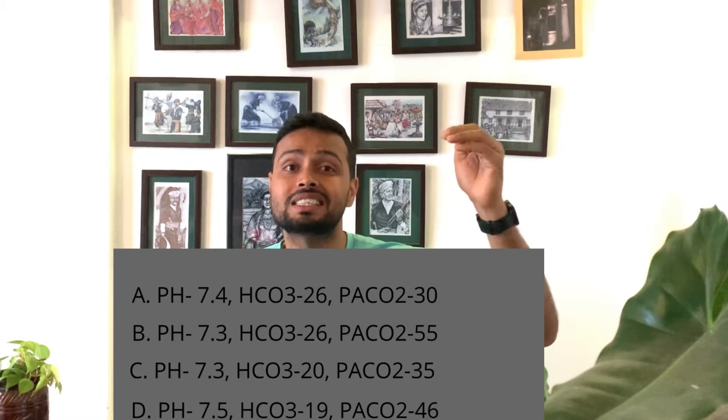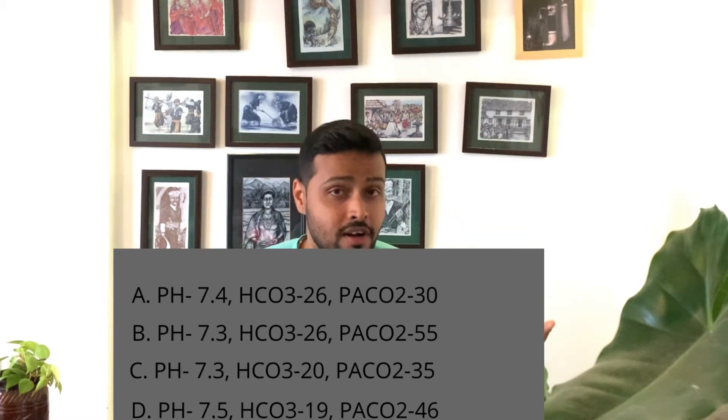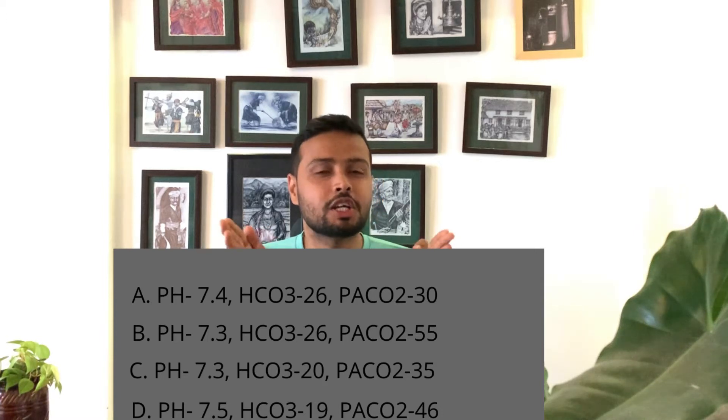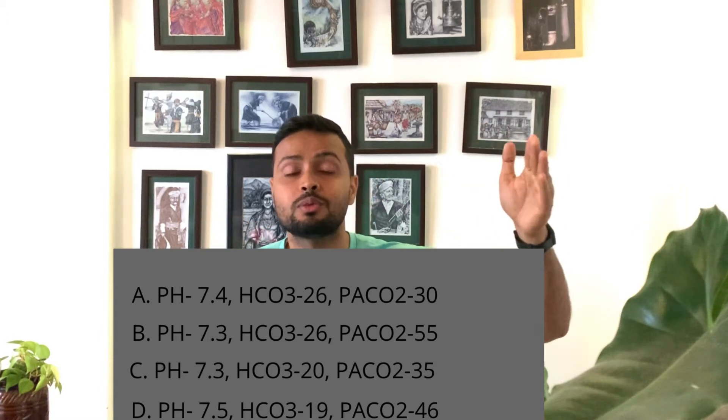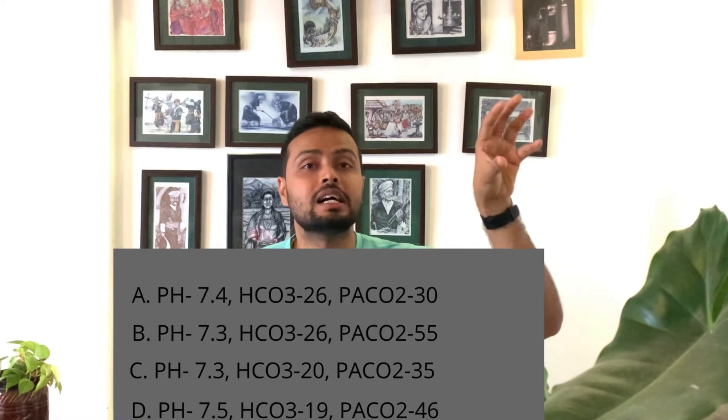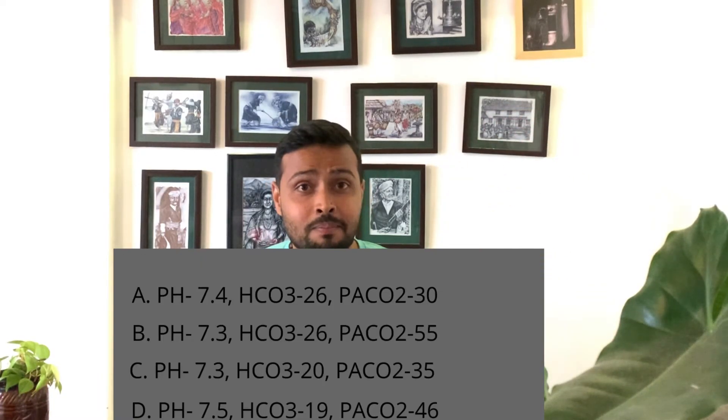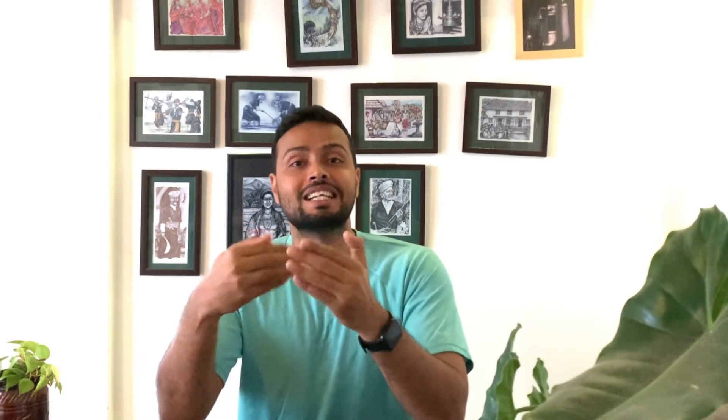The uncompensated part plays a major role here. Since it is uncompensated, there is no change going to occur in the pH — meaning pH has to be less than 7.35. Among the options, only option C has a pH of 7.3, which is less than 7.35, so option C accurately fits the criteria for the diagnosis.